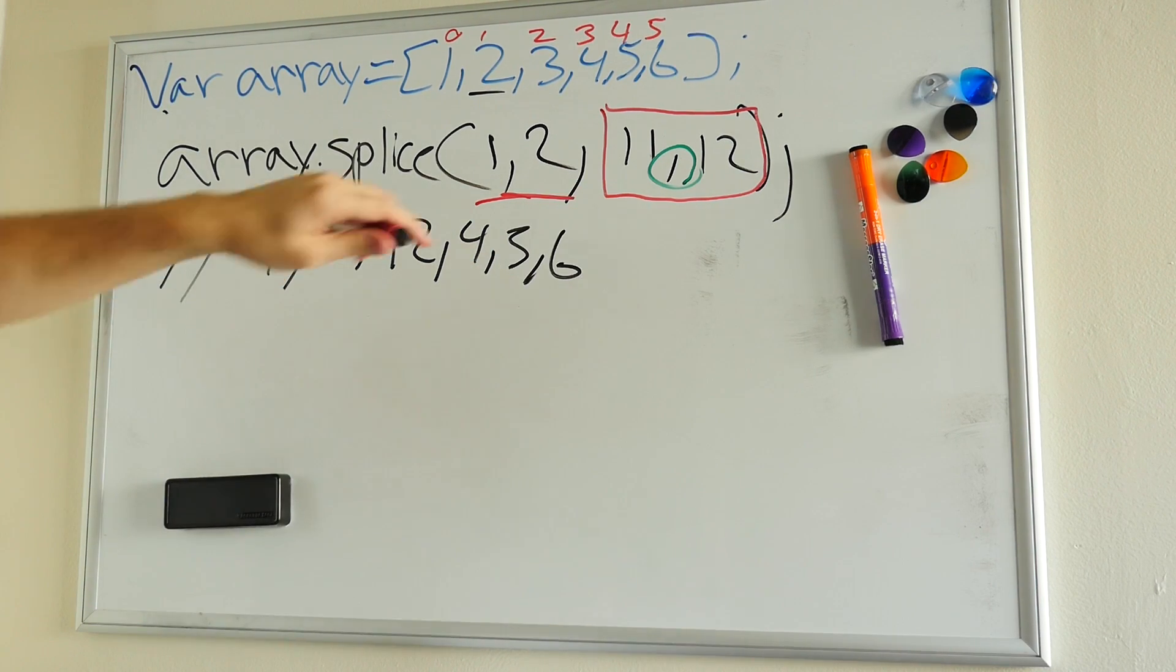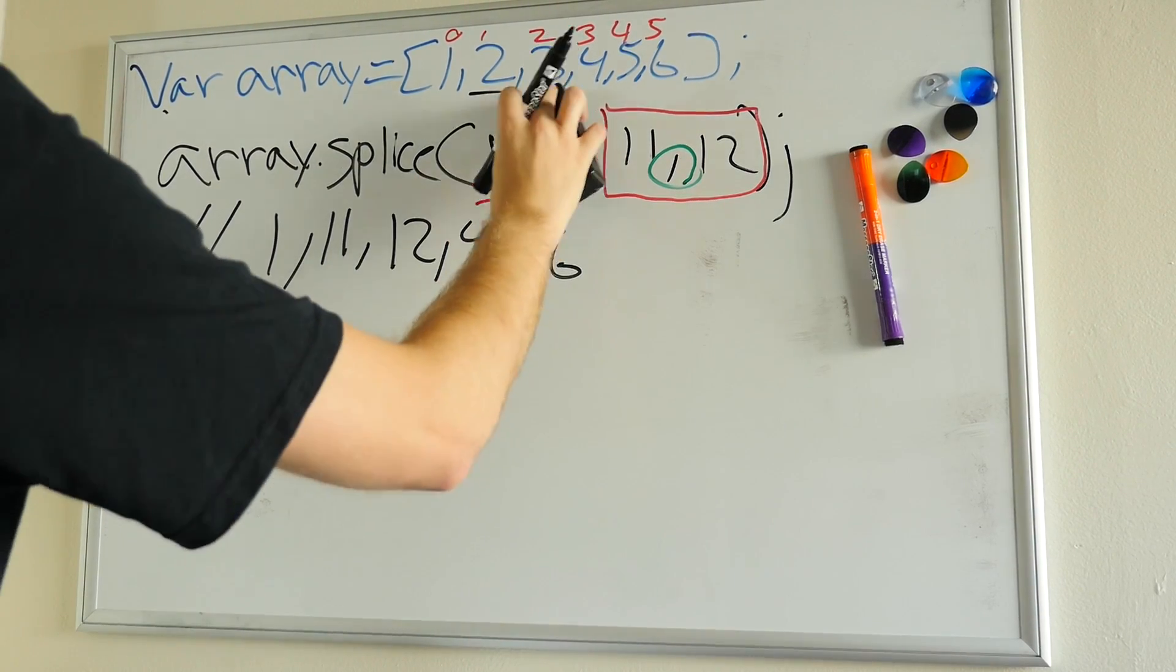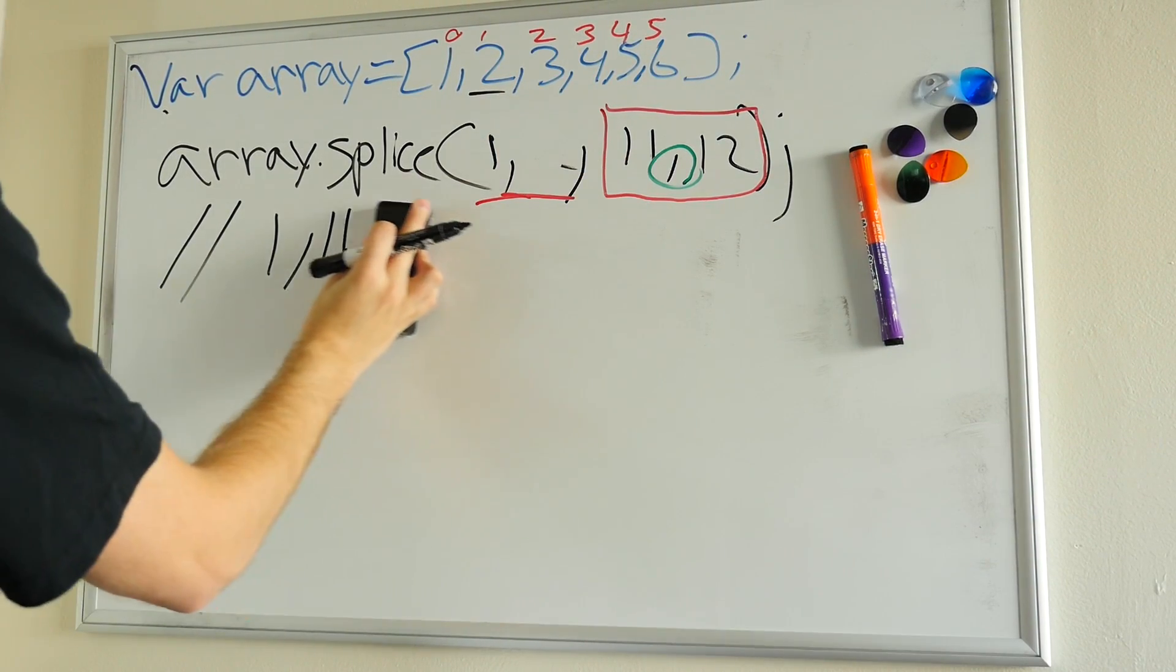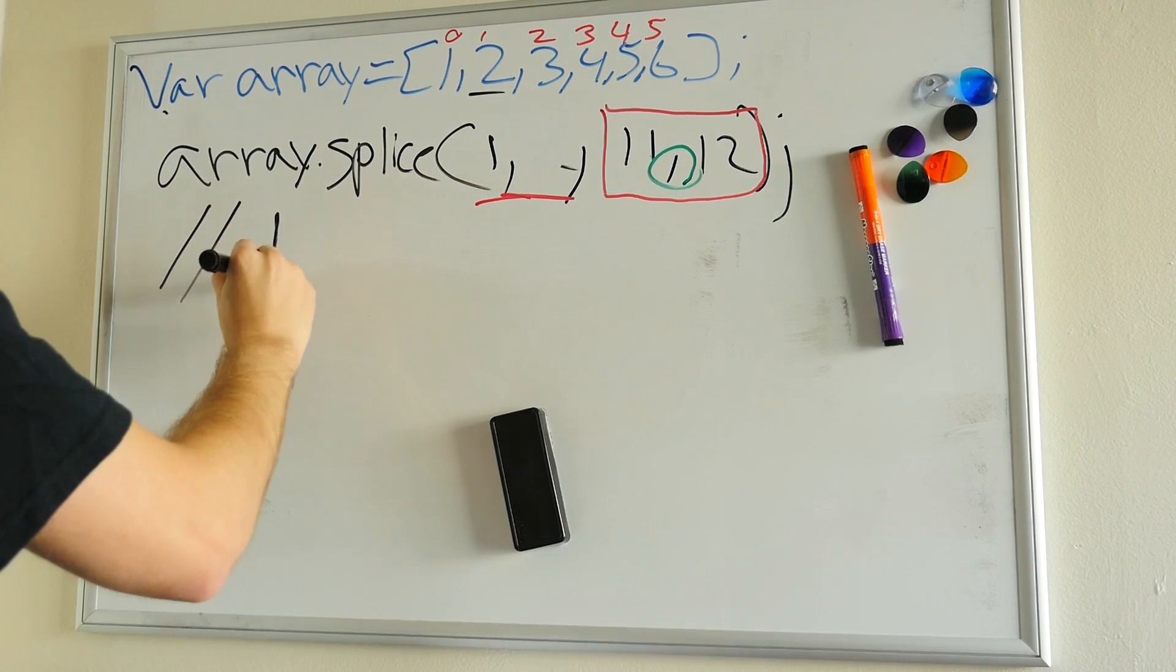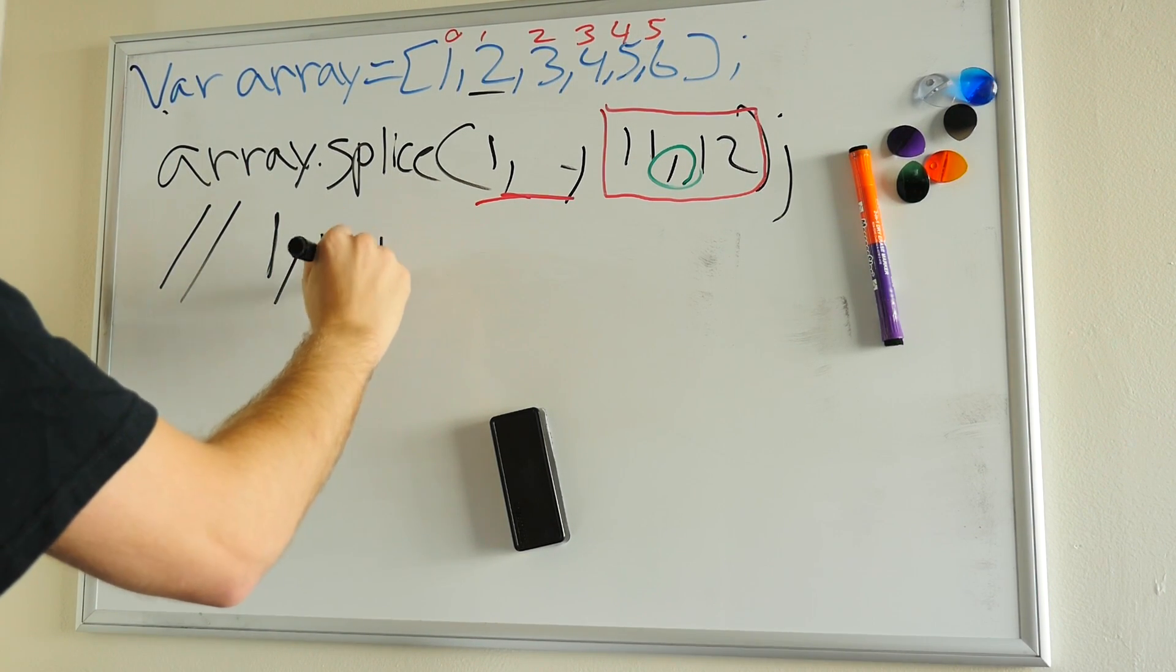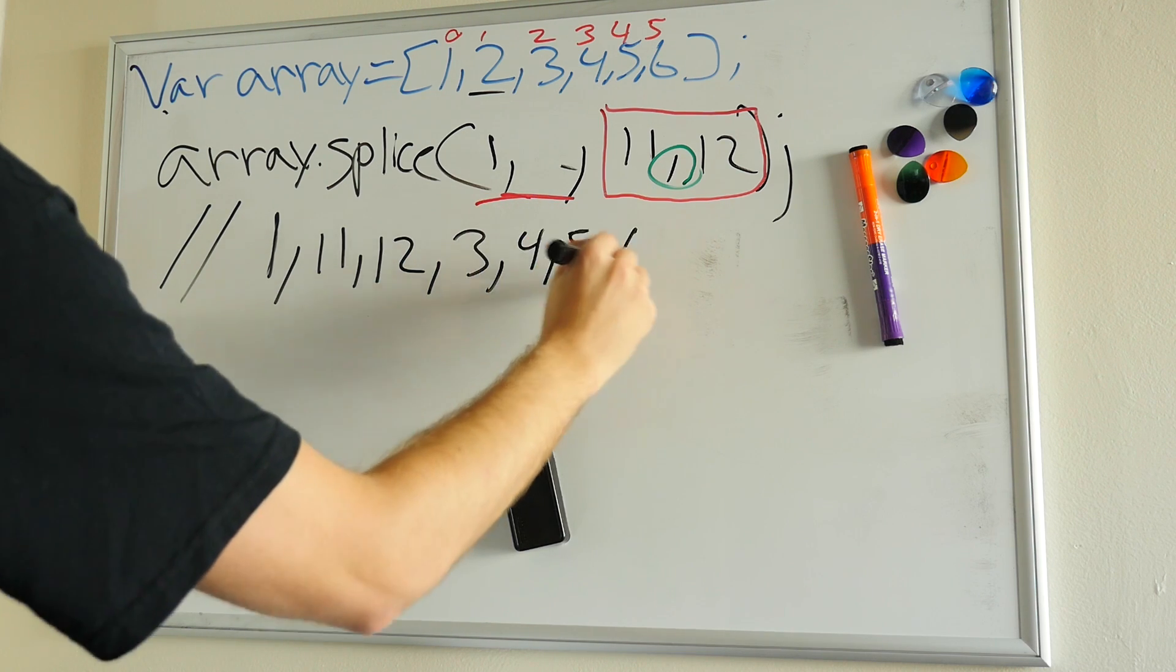Do keep in mind that you don't have to delete and add evenly. So if we wanted to change this right here to only delete one number. So we'll go ahead and delete just the two. Our output would be 1, 11, 12, 3, 4, 5, and 6.